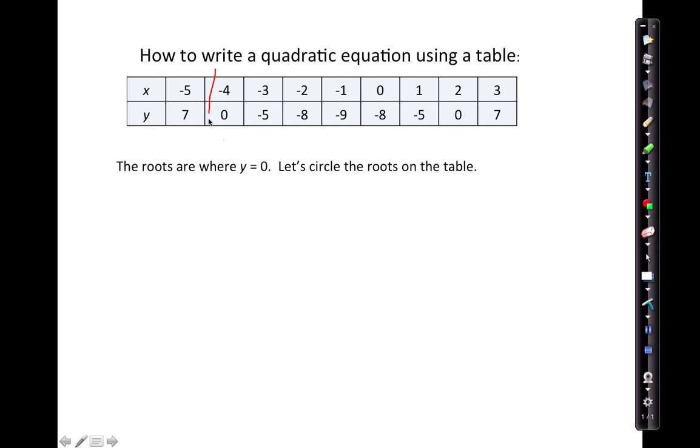So here's one of the roots, x equals negative 4, y equals 0. And the other one is where x equals 2, y equals 0. So our first root is when y equals 0, x equals negative 4. And our second root is when y equals 0, x equals 2.